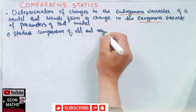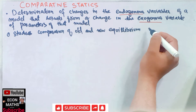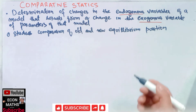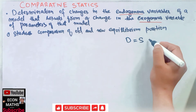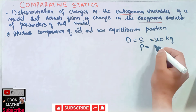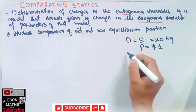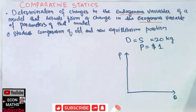Comparative statics studies the comparison of old and new equilibrium positions. To make this clearer, let's consider a simple example. Say the demand and supply of onions is such that demand equals supply at 24 kg when the price is one dollar — so at one dollar, the demand and supply of onions is 20 kg.